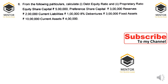The information provided is: equity share capital 5 lakhs, preference share capital 3 lakhs, reserves 2 lakhs, current liabilities 1 lakh, 8% debentures 3 lakhs, fixed assets 10 lakhs, and current assets 4 lakhs. We are asked to calculate the debt equity ratio and proprietary ratio.